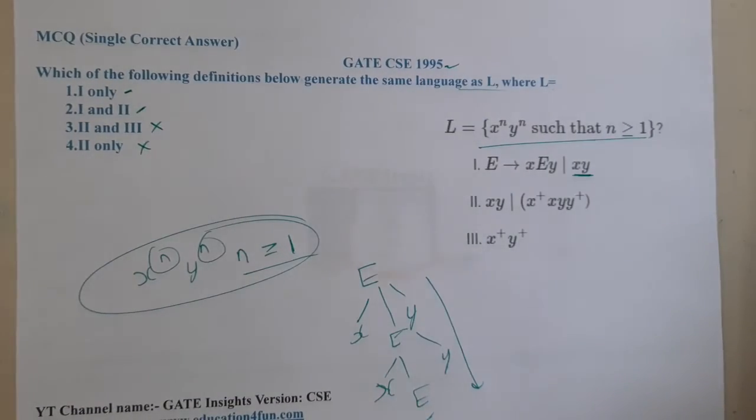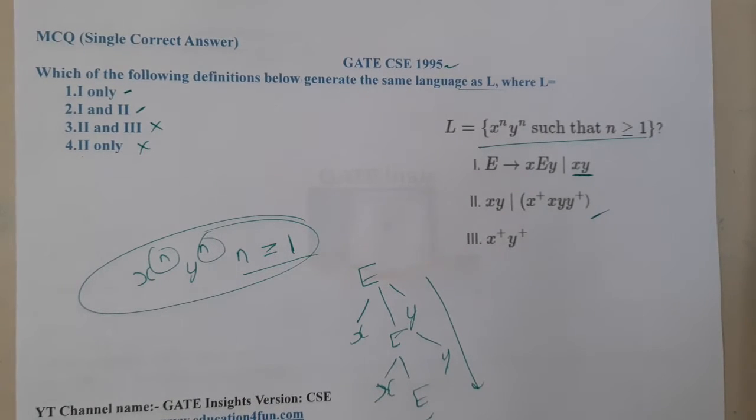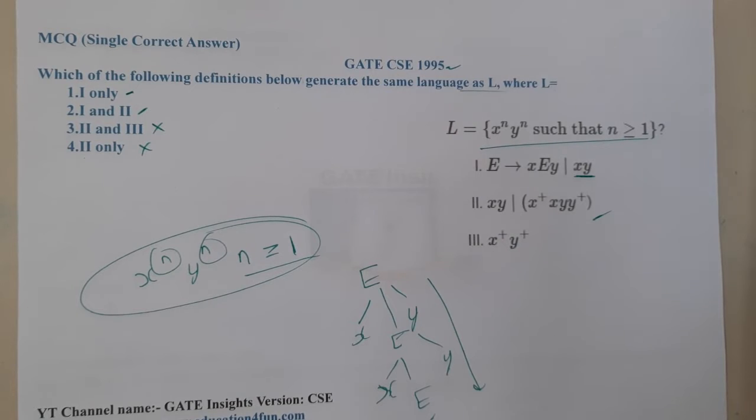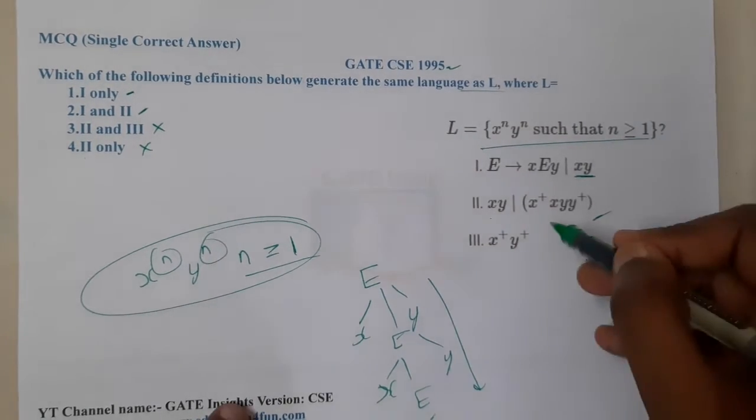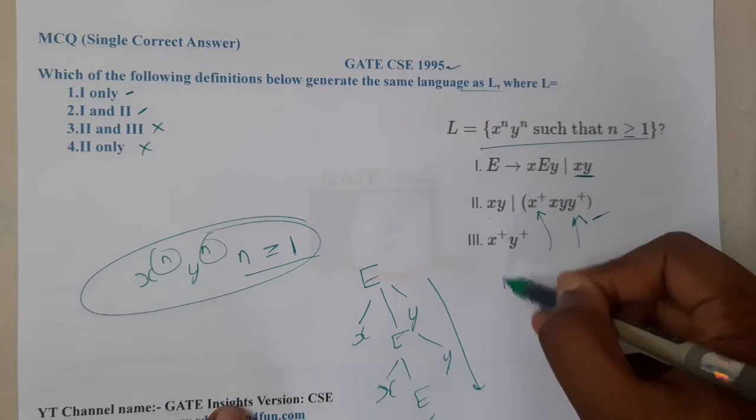Moving on to the second part, here we are having xy, but whenever you say xy plus or you say in this way, can we guarantee that the length will be the same guys? I think we cannot.